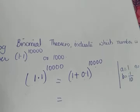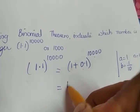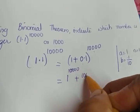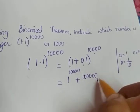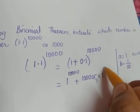I'm going to apply binomial theorem. So what is binomial? There are a raised to n, that is 1 raised to 10,000, plus nC1, that is 10,000C1, into 1 raised to n minus 1, 10,000 minus 1.